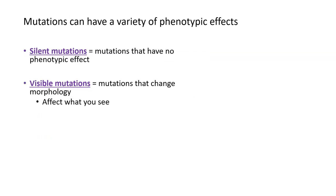We generally call anything that can mutate or change a DNA sequence a mutagen. Mutations can have a lot of phenotypic effects or changes that we can actually see. A silent mutation is a mutation that basically has no phenotypic effect at all — there are no visible changes. A visible mutation, on the other hand, causes a change in the morphology or how an organism looks. Visible and silent mutations are sort of opposites.